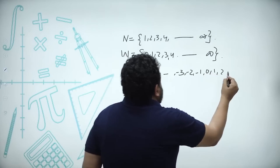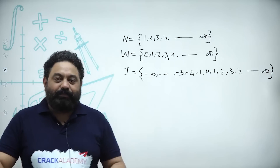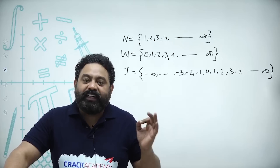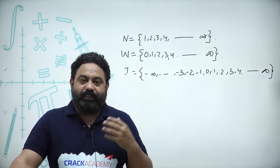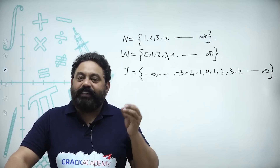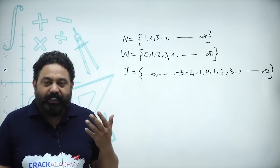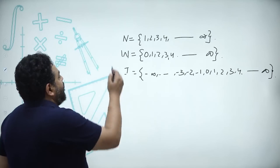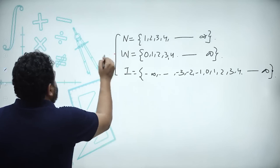We needed counting numbers, then whole numbers because zero was required, and then we needed negatives — the negatives of natural numbers. Please never say integers are from minus infinity to infinity. Saying 'negative images of natural numbers' is far better, because fractions, decimals, and irrational values are not included. For the first three categories — no fractions, no decimals.